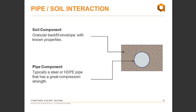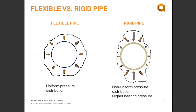There is an interaction between the pipe and the soil with flexible pipes. There are two components: the soil component, which is a granular backfill envelope with known properties or engineered backfill, and the pipe component, which is typically a steel or HDPE pipe that has great compression strength. The big difference between flexible and rigid pipes is that flexible pipe has a uniform distribution of pressure throughout the backfill, while rigid pipes offer a non-uniform pressure distribution, resulting in higher bearing pressure.